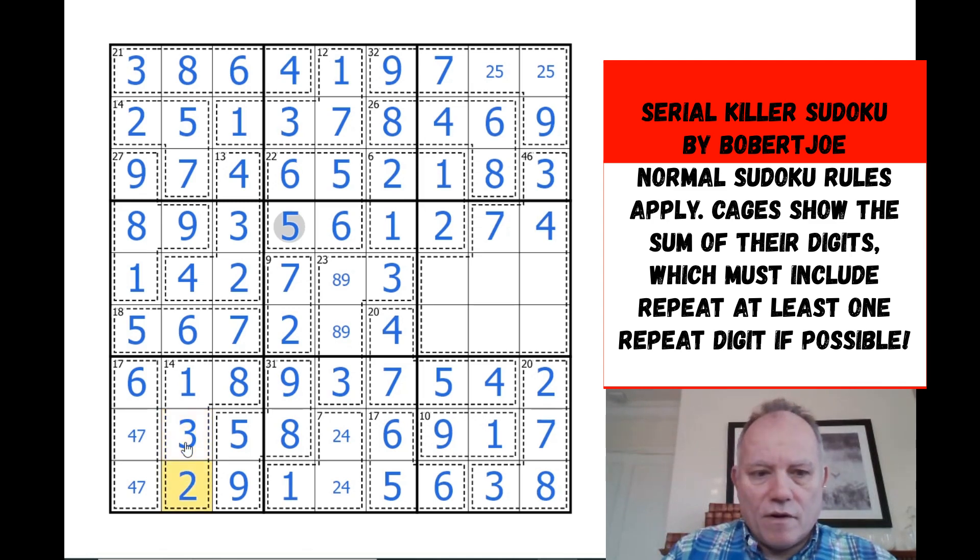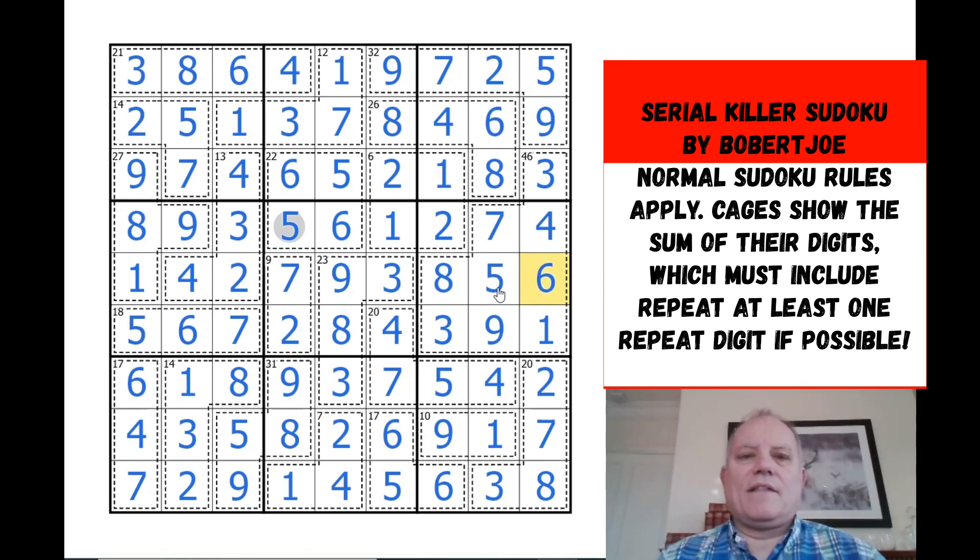Three and seven to go in here. That's going to resolve our remaining ambiguities in rows eight and nine. Five, nine - that does fix the eight nine pair that's been hanging on since almost the start. Eight, three, two digits left to go: one and six. And there we go, that is the solution to Bobert Joe's lovely Serial Killer idea.